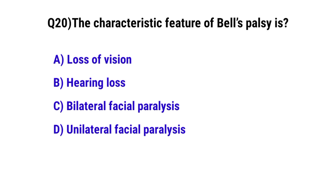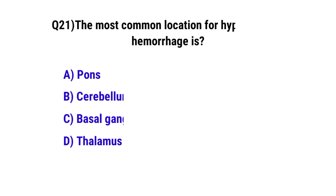Question No. 20: The characteristic feature of Bell's palsy is — the correct option is D: unilateral facial paralysis.